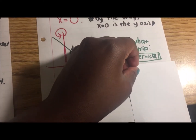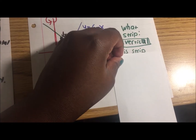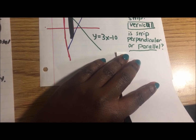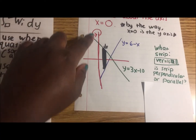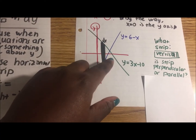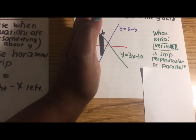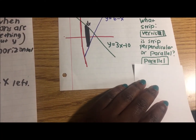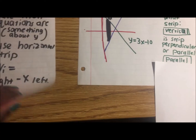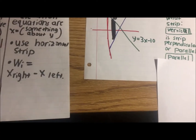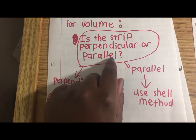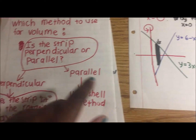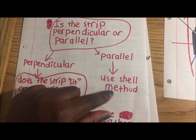Is the strip perpendicular or parallel to the rotating axis? The strip is vertical and the rotating axis is also vertical, so the strip is parallel to the rotating axis.